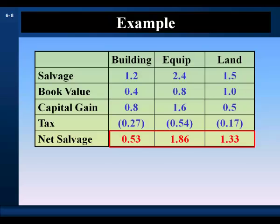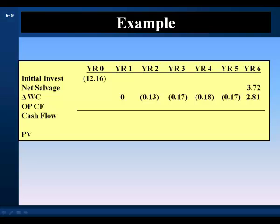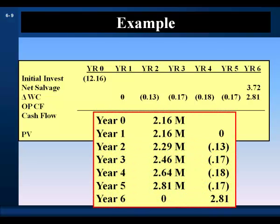We do the same calculation for the equipment and for the land, getting a total net salvage at the end of year six of $3.72 million. For the change in net working capital, from our net working capital schedule we calculate the change for each year. In year six, we assume we recover our investment in net working capital. Our investment in net working capital at the beginning of year six is $2.81 million, which is recovered at the end of year six.